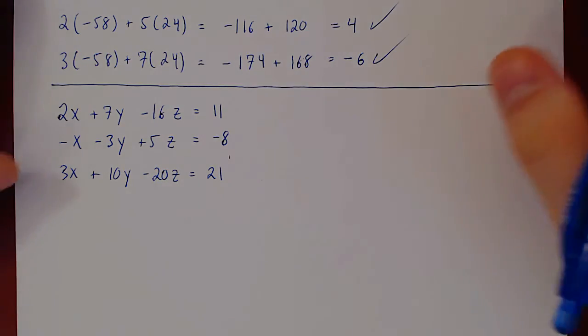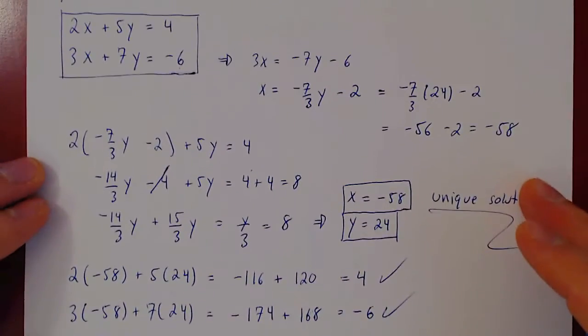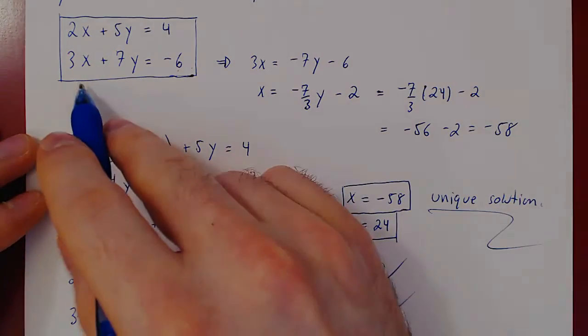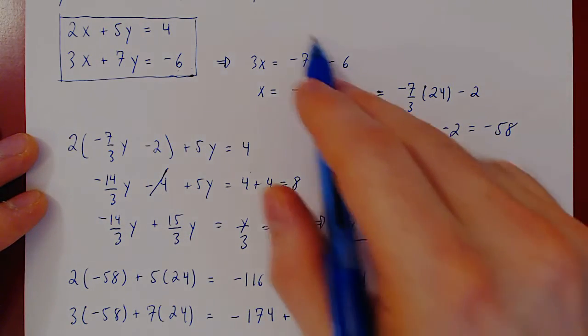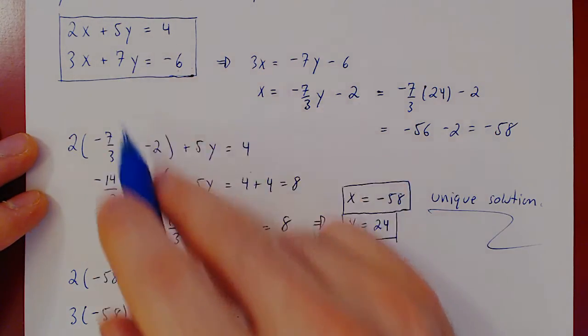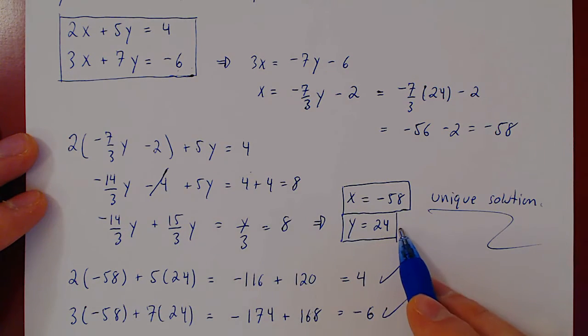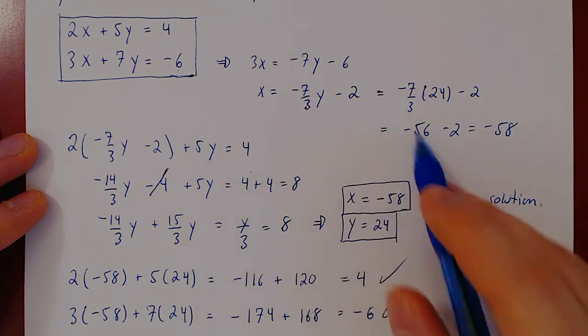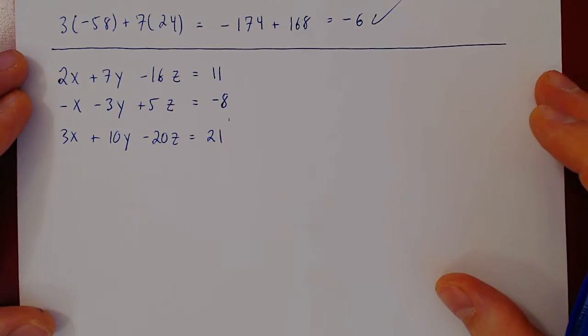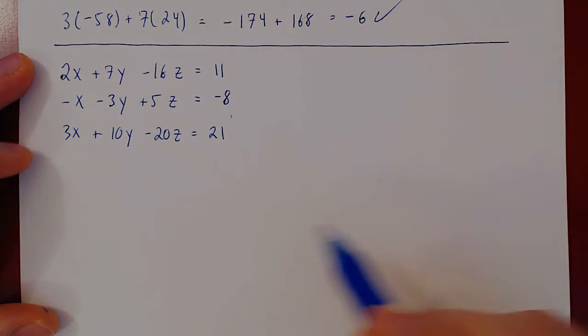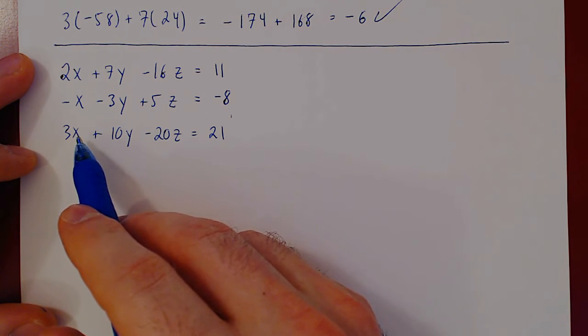Well, if you think about it, we could do the same thing that we did in the previous problem. Right? We solved for x as a function of y, then we solved back into the first equation, and then we were able to solve for y, then going backwards, solving for x. Well, we could play the same game here, but this will be slightly more unpleasant.